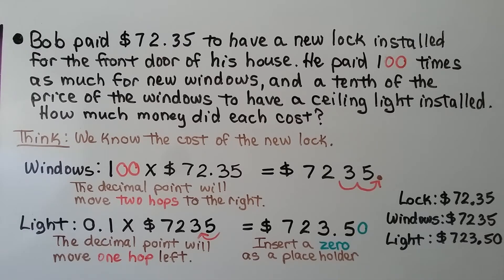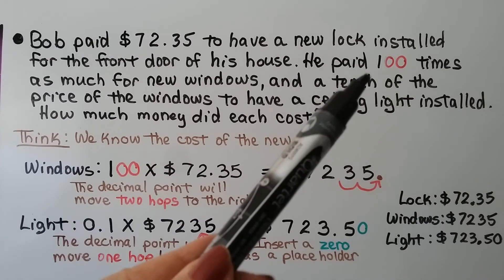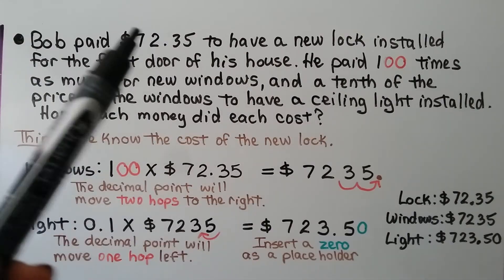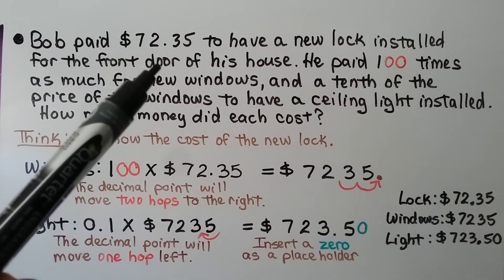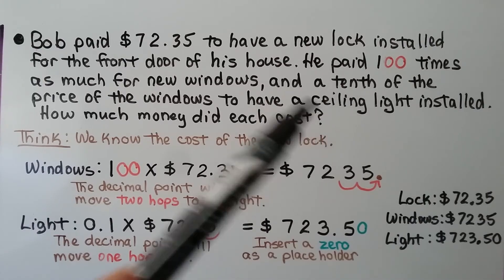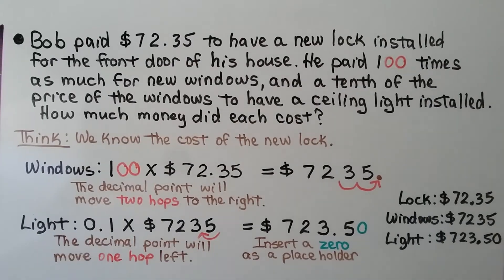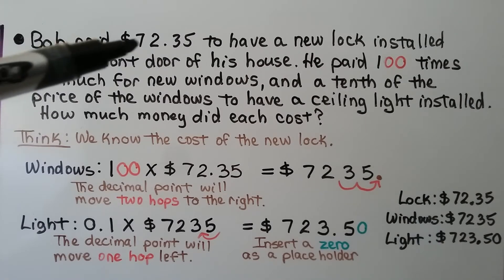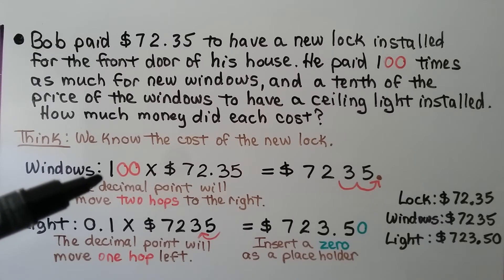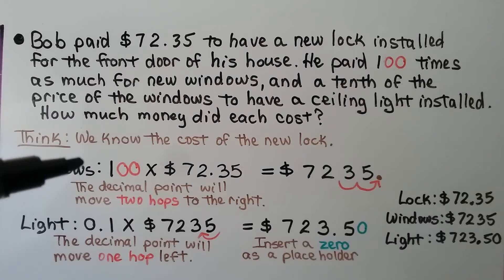Bob paid $72.35 to have a new lock installed for the front door of his house. He paid 100 times as much for new windows, and a tenth of the price of the windows to have a ceiling light installed. How much money did each cost? So we know the price of the lock, and the windows are 100 times as much — 100 times $72.35.